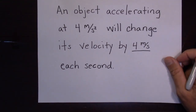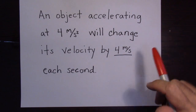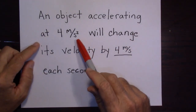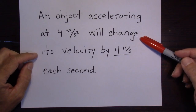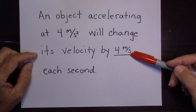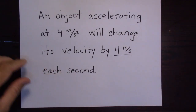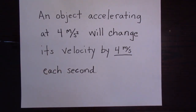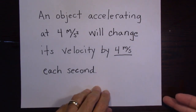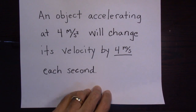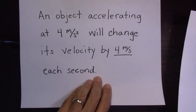This method is going to make use of a few things. One is the idea of acceleration — you need to know conceptually what acceleration actually means. An object that's accelerating at 4 meters per second squared is going to change its velocity by 4 meters per second each second. It will either gain speed or lose speed.